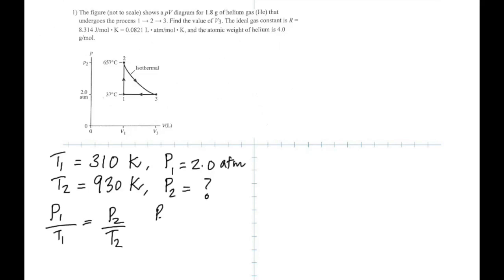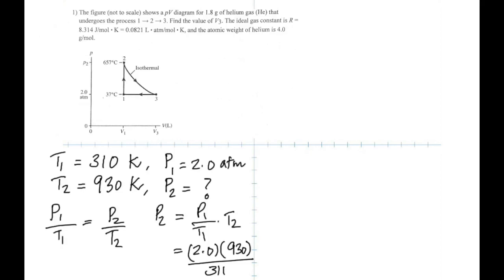In this problem you do not actually have to find that pressure — I'm just showing that at constant volume, pressure is directly proportional to the absolute temperature. So you get P2 as 6 atm, because the temperature tripled and therefore the pressure also triples.